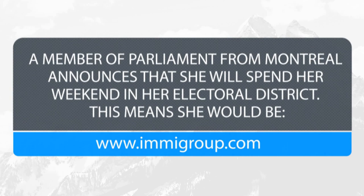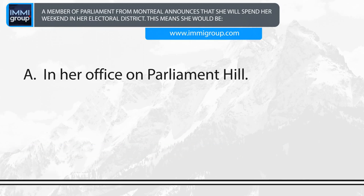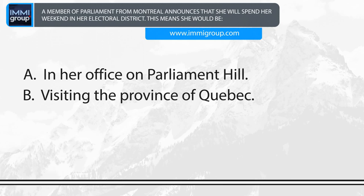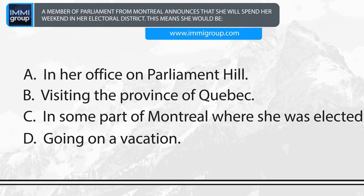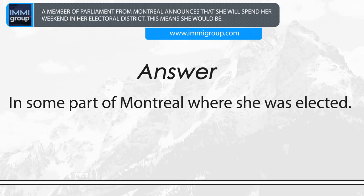A member of Parliament from Montreal announces that she will spend her weekend in her electoral district. This means she would be: A. In her office on Parliament Hill. B. Visiting the province of Quebec. C. In some part of Montreal where she was elected. D. Going on a vacation. Answer: In some part of Montreal where she was elected.